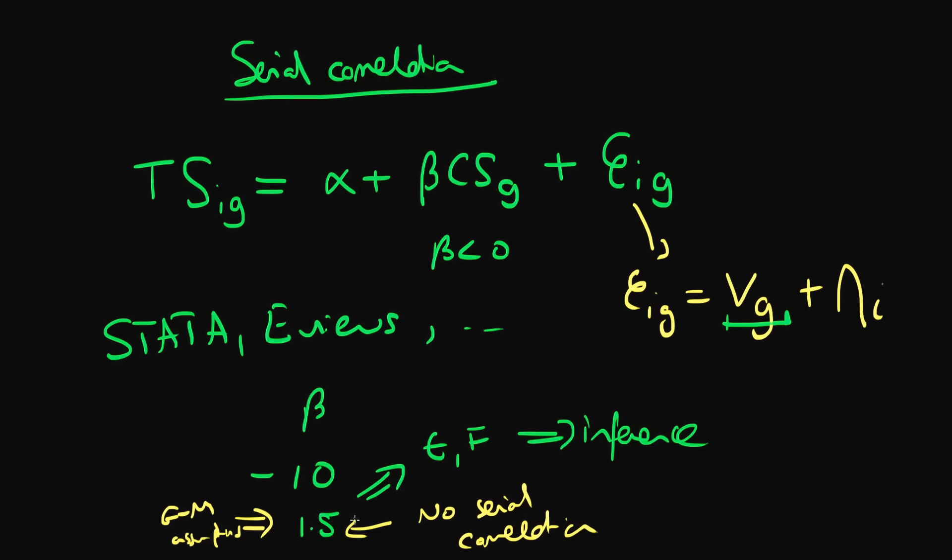If we assume that the Gauss-Markov assumptions are true, perhaps the true standard error is more like 5. So we're much less certain in our estimates of the effect of classroom size on test scores than our statistical programs output makes us actually think we are.